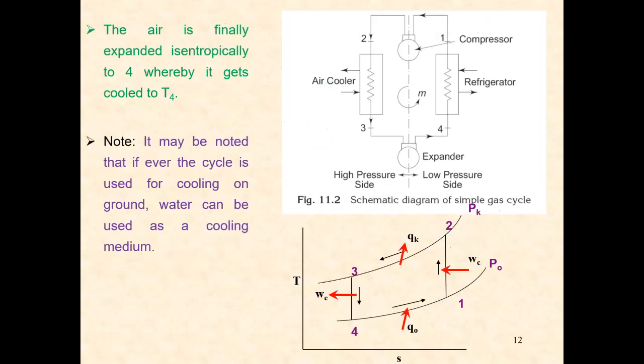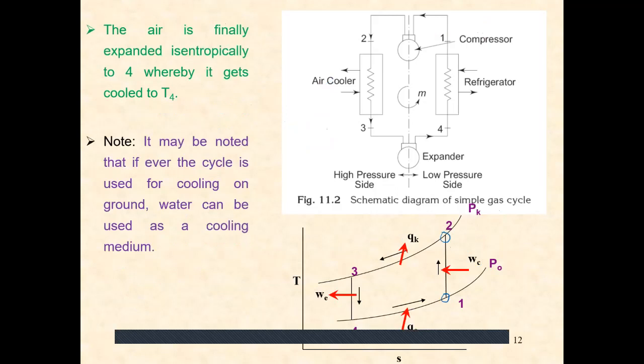To summarize the complete cycle: process 1 to 2 is reversible adiabatic compression; process 2 to 3 is heat rejection in the air cooler; process 3 to 4 is reversible adiabatic expansion in the expander; and process 4 to 1 is heat transfer in the refrigerator.